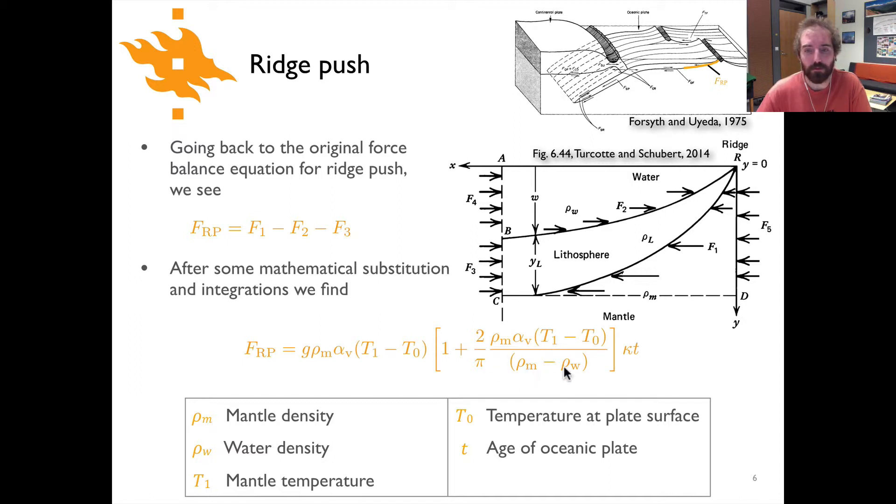Divided by the difference in density between the mantle and water times the thermal diffusivity times time. And so here you see something perhaps a little bit interesting, time comes into the equation of course because oceanic lithosphere is going to be cooling and thickening as it moves away from the spreading ridge, so that's where the time dependence comes in.